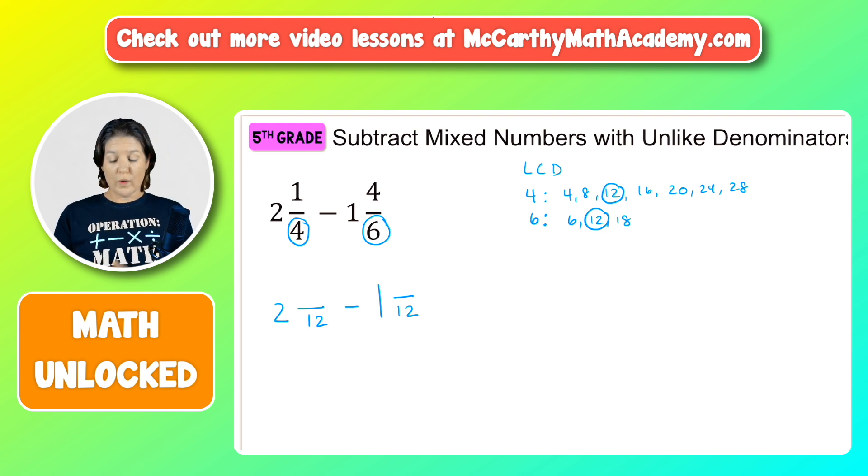All right. So we had the fraction 1/4. Our denominator was 4, and then we got to 12. So how did we get there? We multiplied by - we've already done it. We multiplied by 1, 2, 3. So let's multiply our denominator by 3. Same on the bottom, same on the top. So 1 times 3 equals 3. In other words, 2 and 1/4 is equivalent to 2 and 3/12.